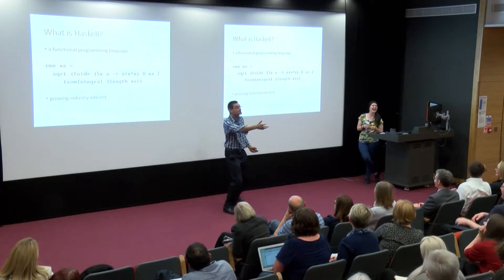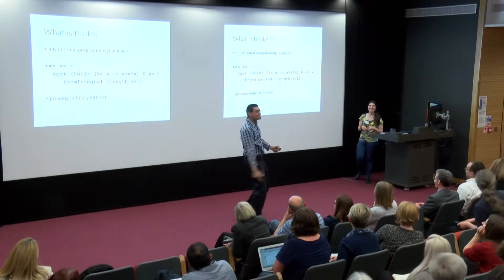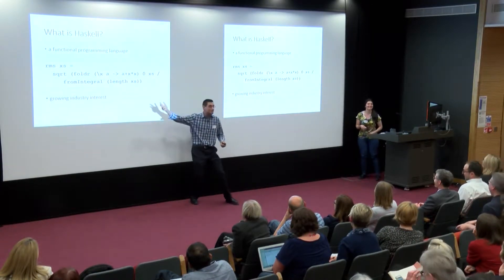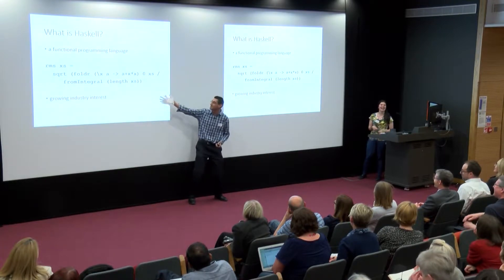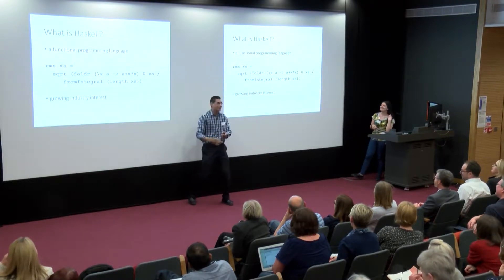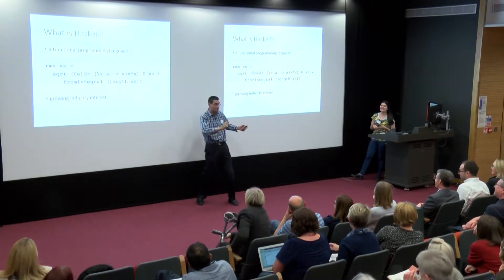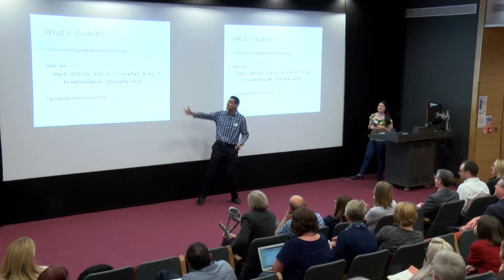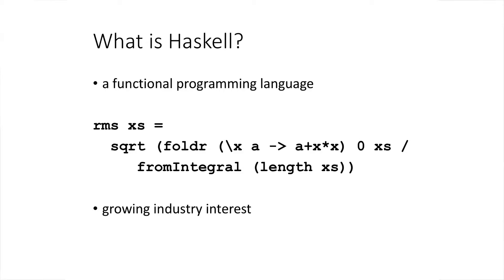In C or Java you'd have maybe 10 lines of code to do a root mean square calculation. In Haskell we can do it in — well, it didn't quite fit on one line, but maybe two lines. It's very concise, and it's a very mathematical model for expressing your computations.